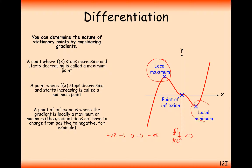For the local minimum, it's going from a negative gradient on the left-hand side, then having a zero gradient, and then turning into a positive gradient. You can see that the rate at which the gradient is changing — which is effectively the second derivative — is getting larger. It's going from a negative value to a zero value to a positive value, so the second derivative is greater than zero.